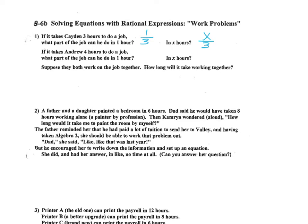If it takes Andrew four hours to do a job, what part of the job can he do in one hour? One fourth. So in x hours, that would be what? x over four. So now it says, suppose they both work on the job together. How long will it take working together?